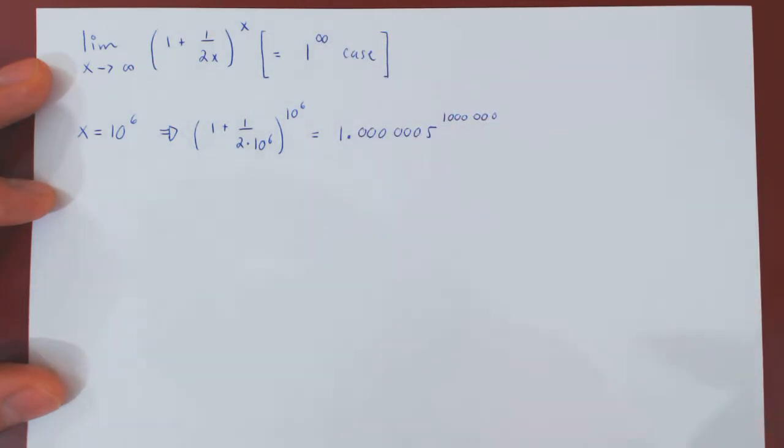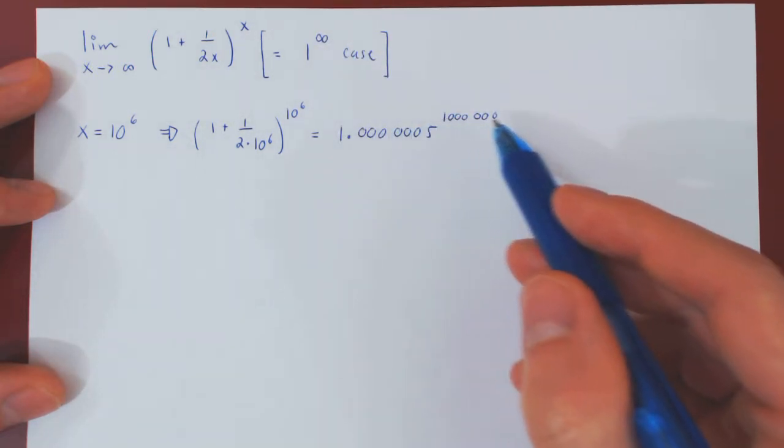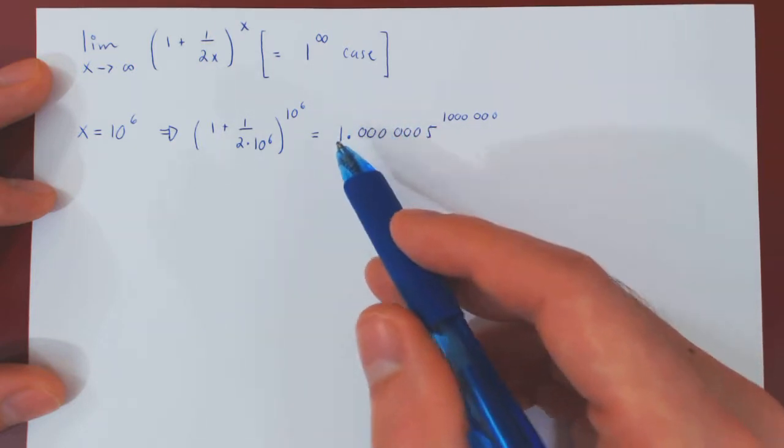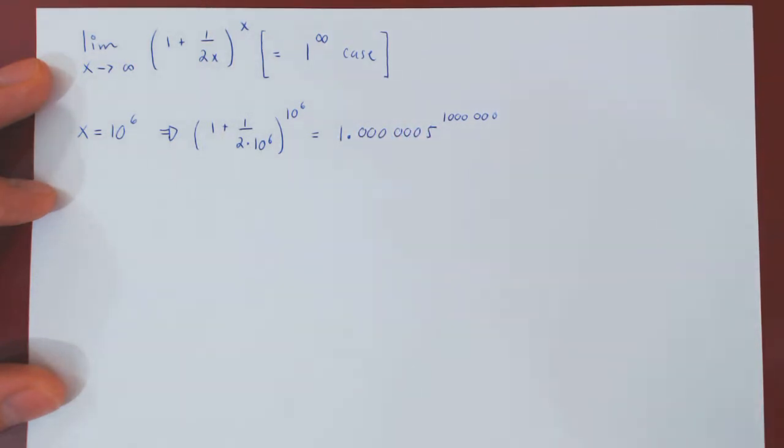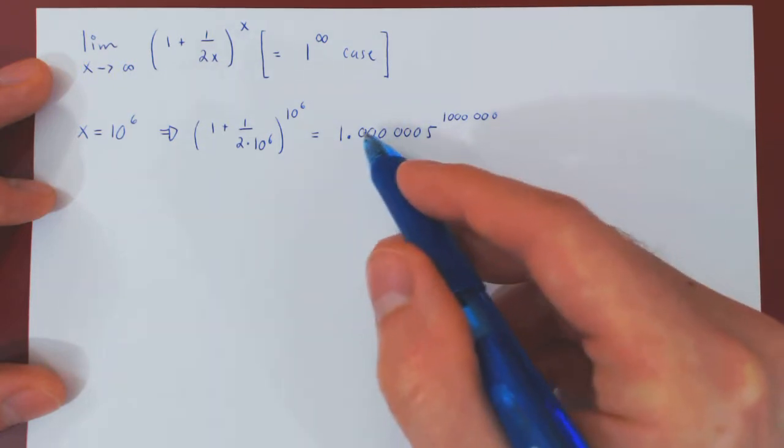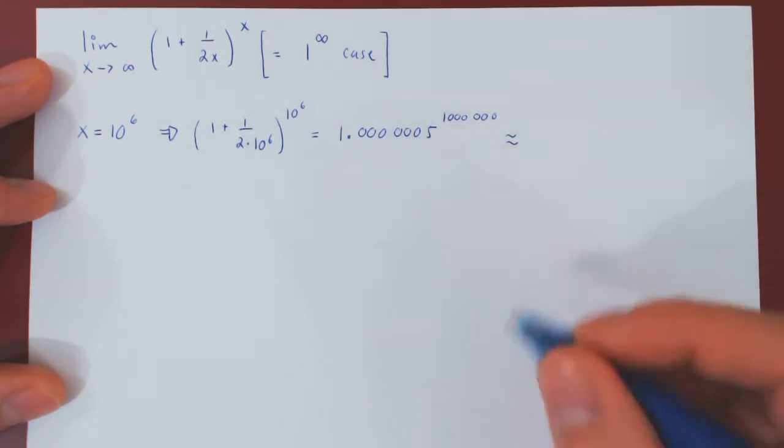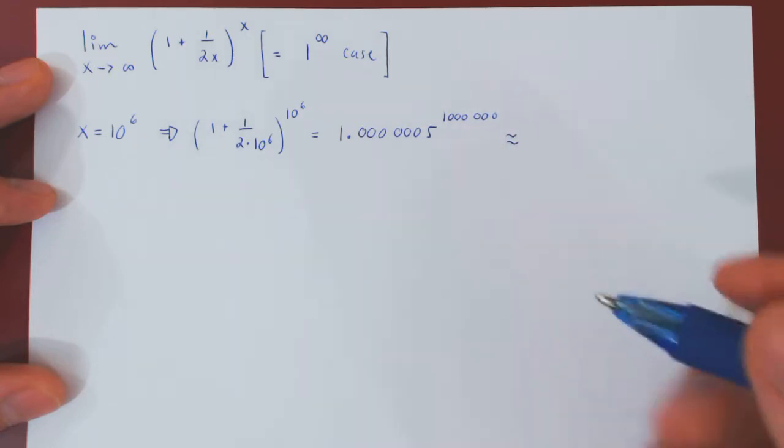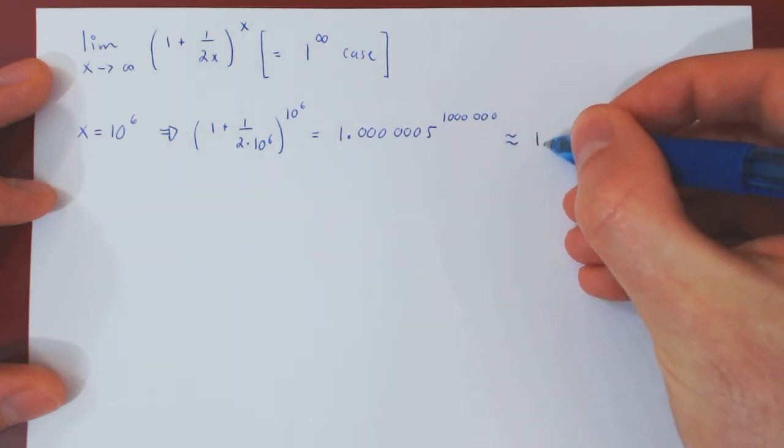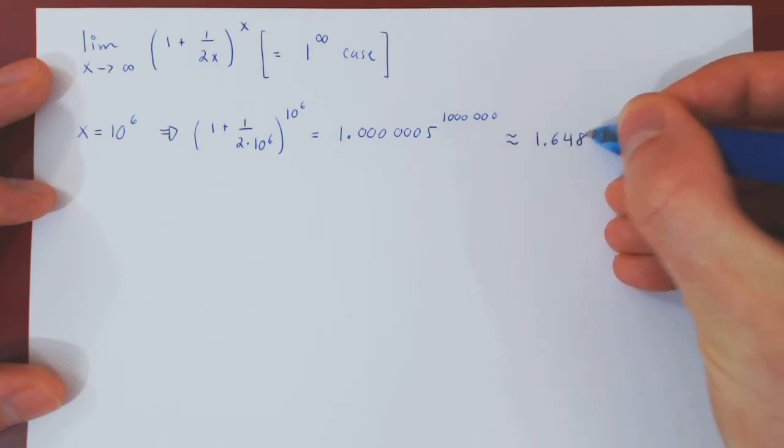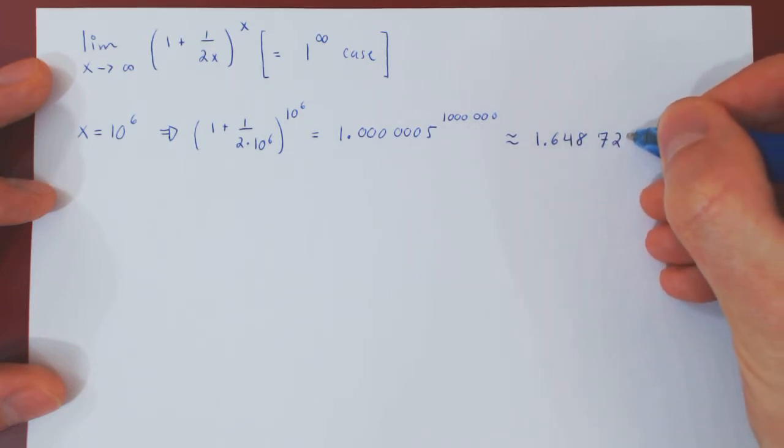So you see, we have a number that is now very close to 1 but slightly larger than 1, and we have a very large exponent. But if you use your intuition, we know that if we take a large power of a number that is larger than 1, then the number will be a little larger. And so, if you use your calculator and you punch this in, you will find approximately 1.648721065.